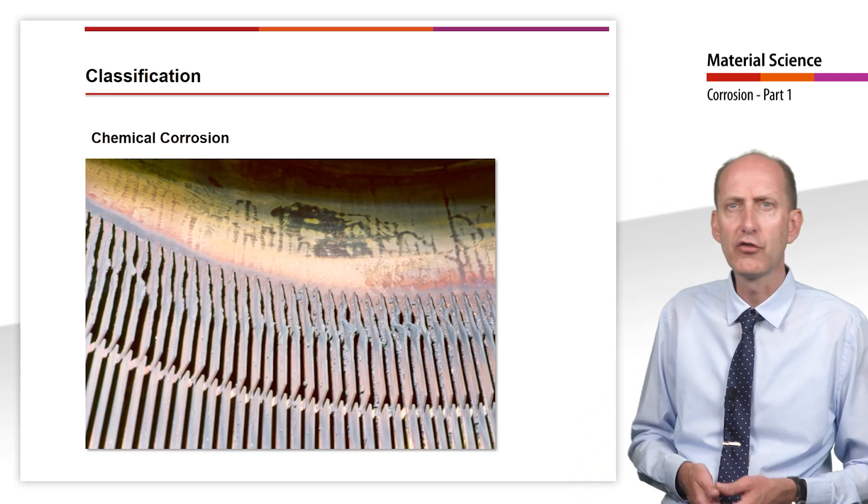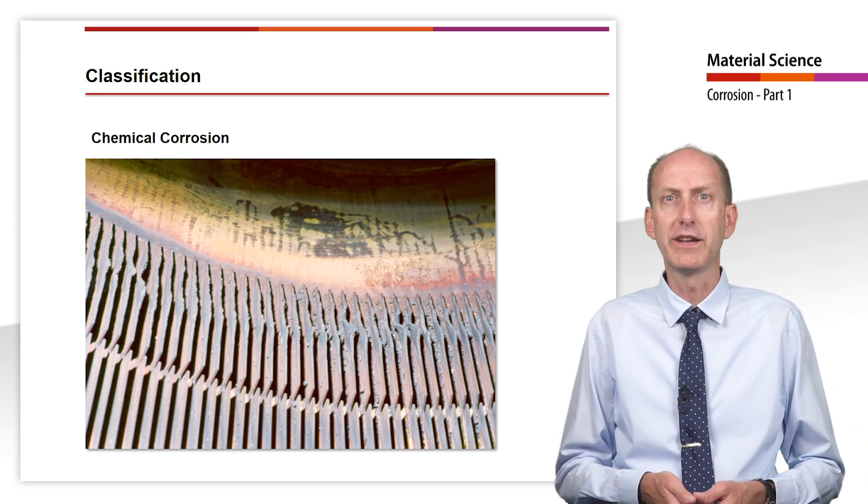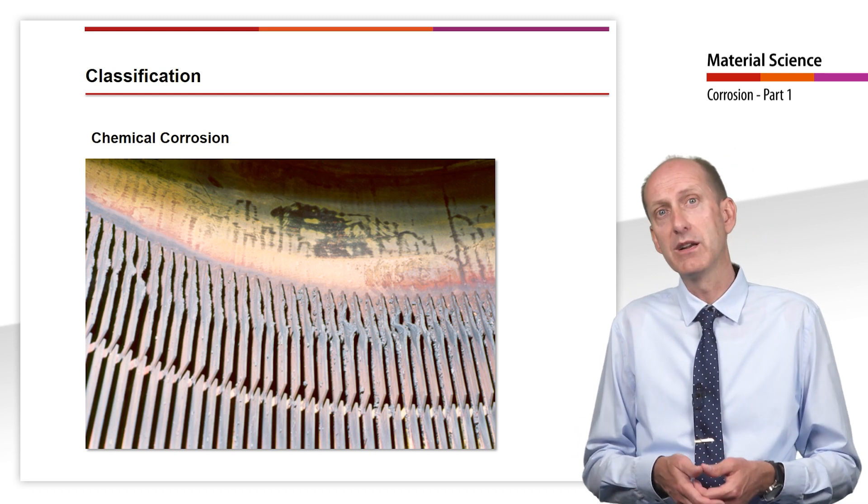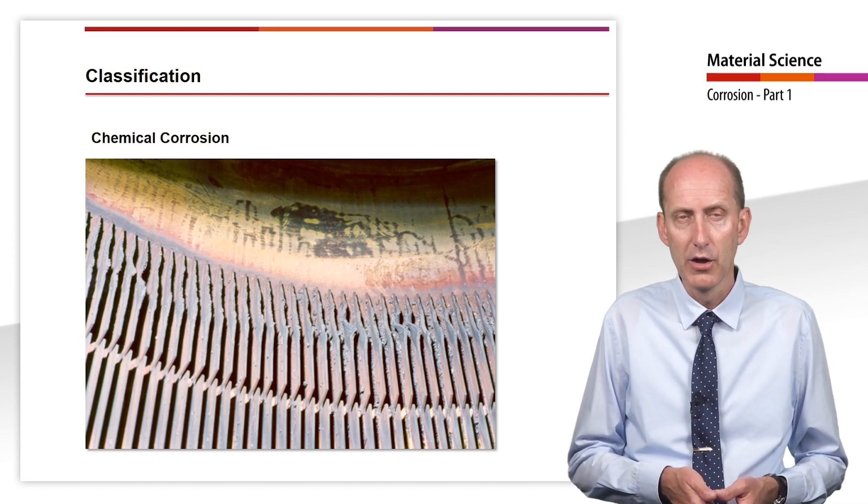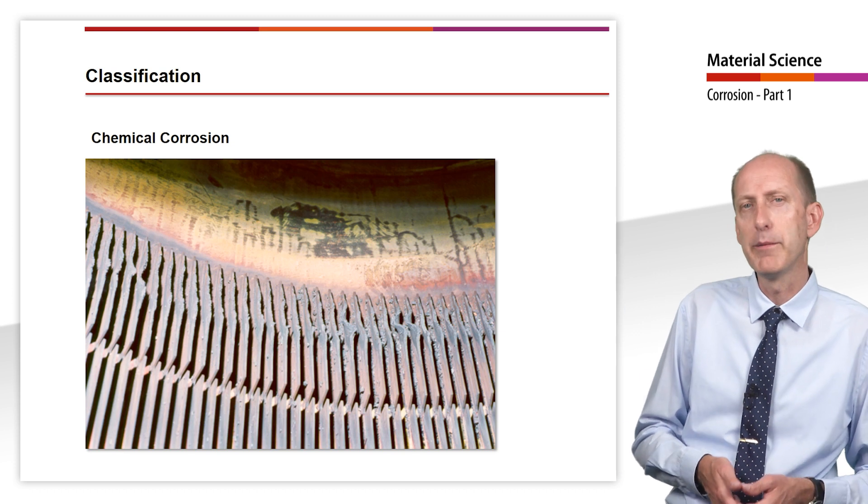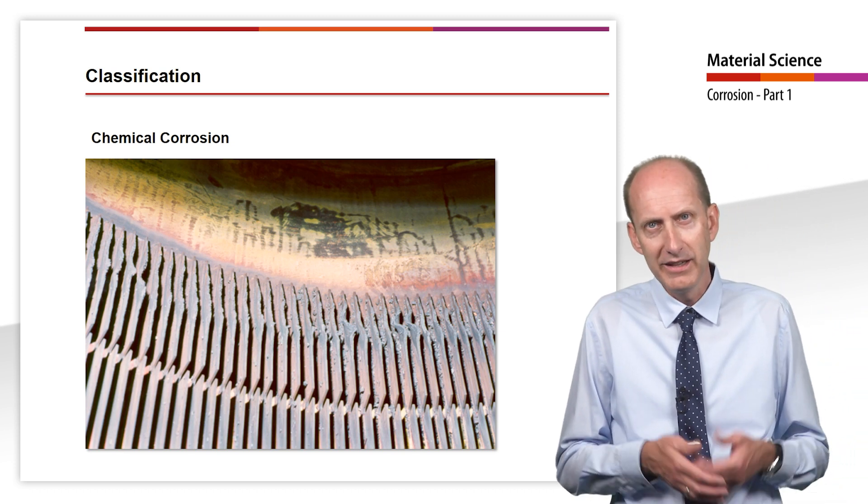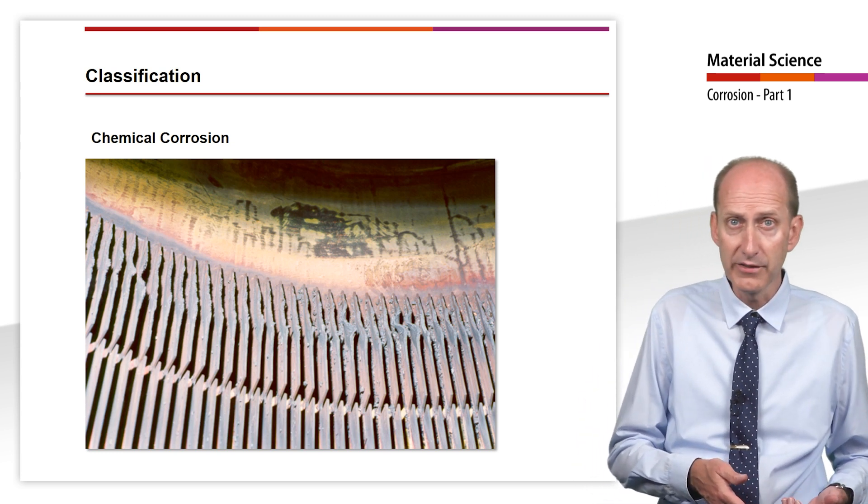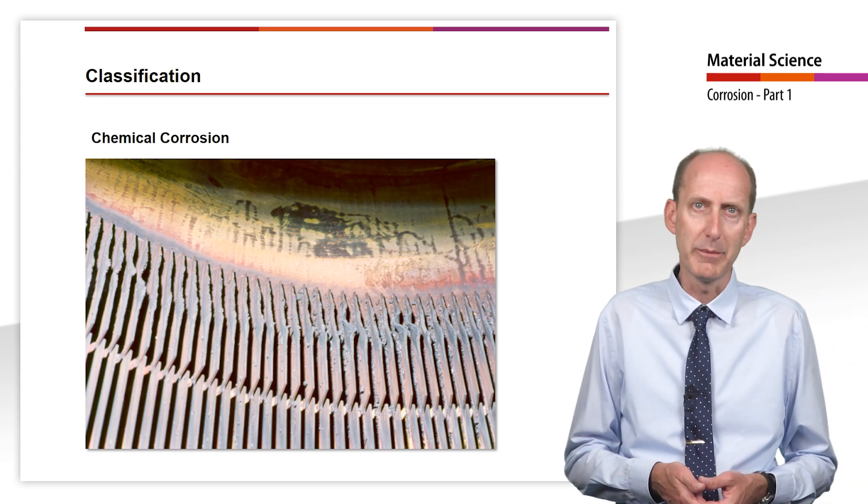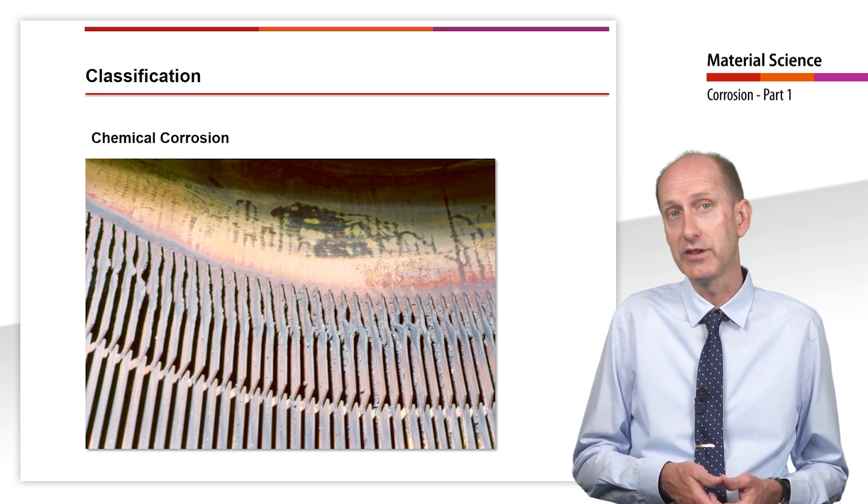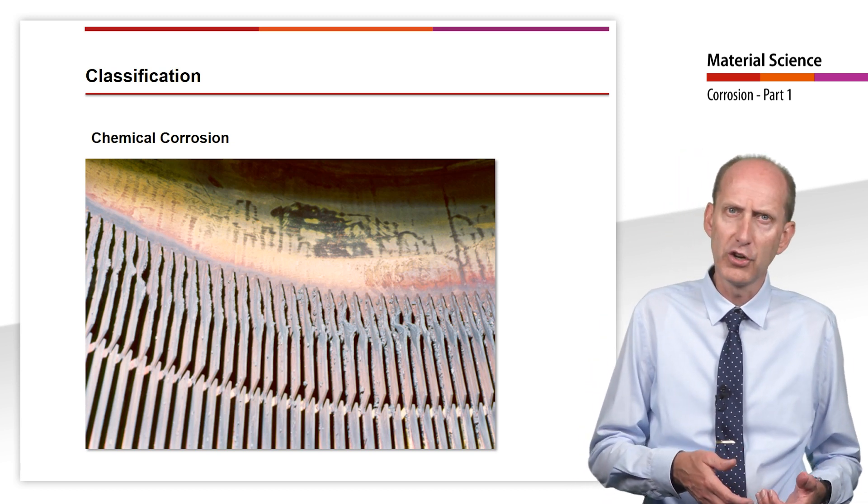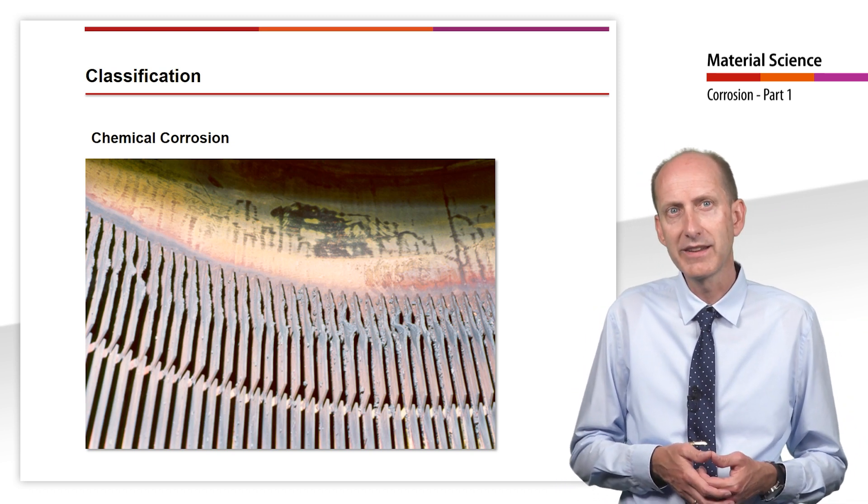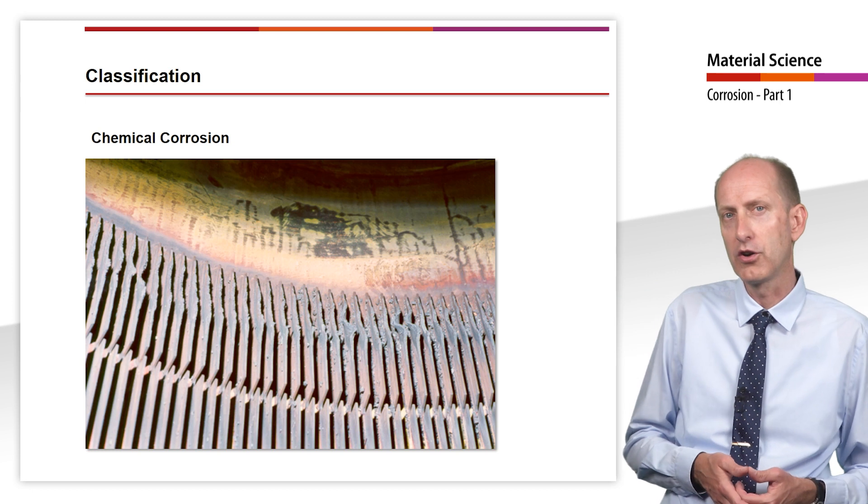Corrosion is divided into three broad classes according to the cause of corrosion: chemical, electrochemical and physical corrosion. First of all, let us discuss chemical corrosion. Here the corrosion in hot gases is to be mentioned above all. The chemical reaction that usually causes the corrosion damage here is strong oxidation. This photo shows a boiler that has been operated at too high temperatures and has scaled accordingly due to strong oxidation.